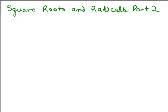This is part 2 of Square Roots and Radicals. In part 1, we were looking at numbers and using the square root symbol, which gives us the principal square root, not negative numbers. The square root of 9 means what number times itself is 9, and that would be 3.